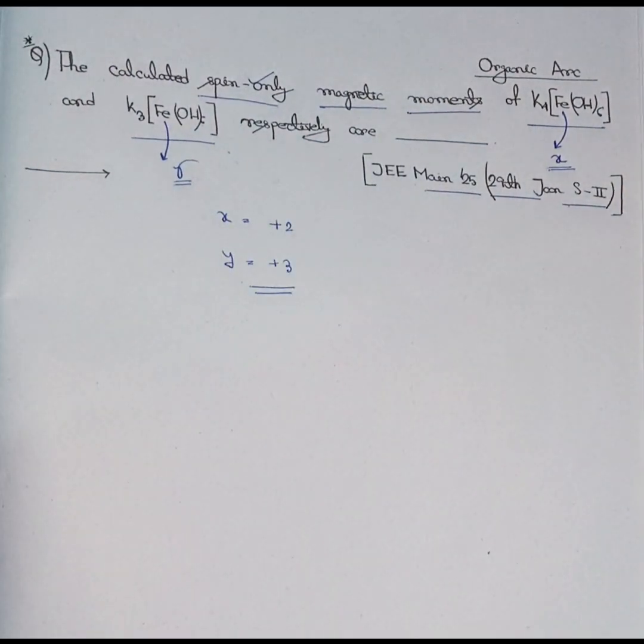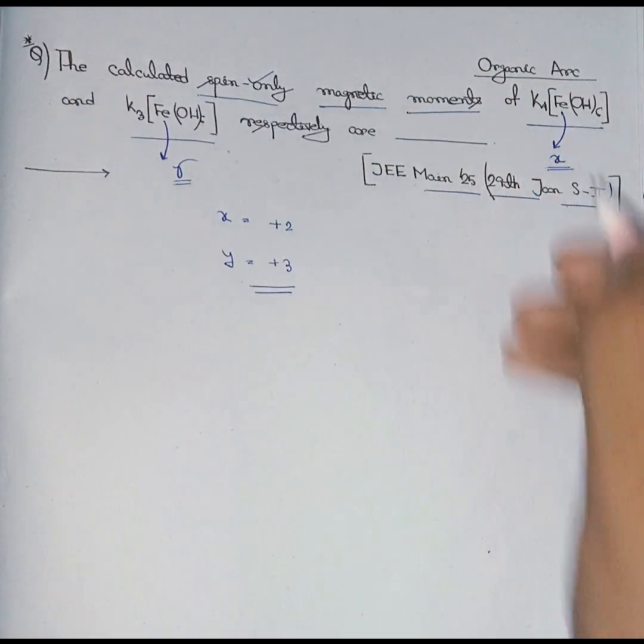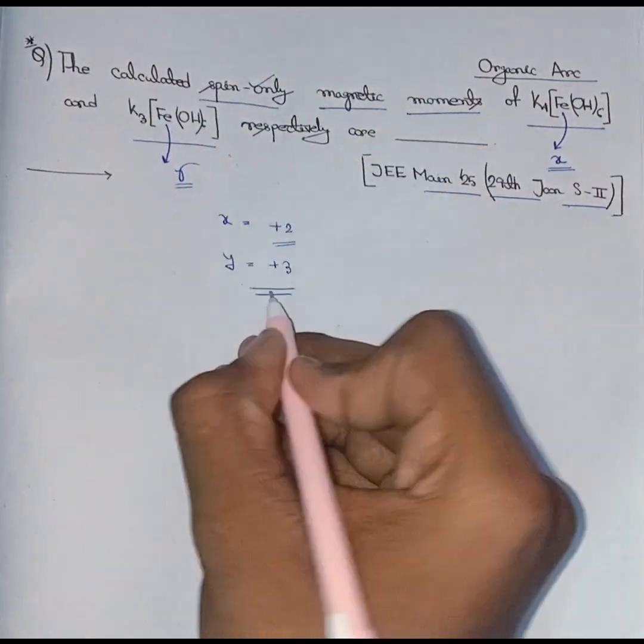And I previously calculated these valencies. I think you know the process of calculating valencies of a central atom of a complex compound. So I have written here this Fe, the valency of this is +2 and here is +3.